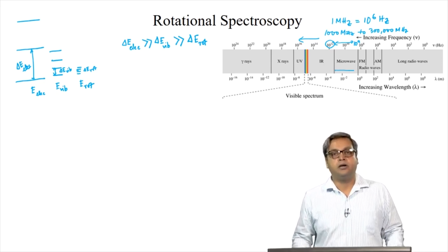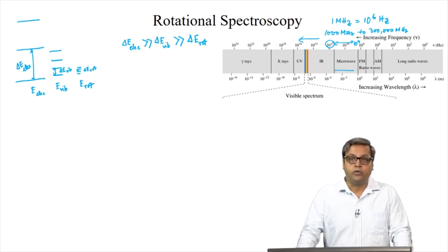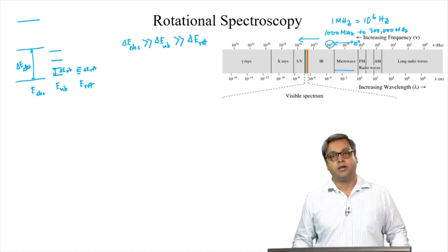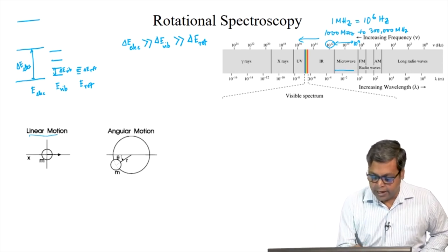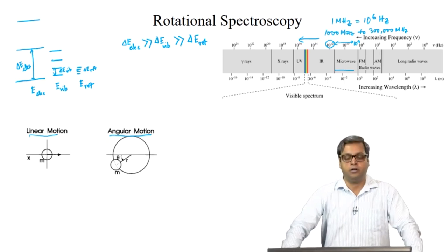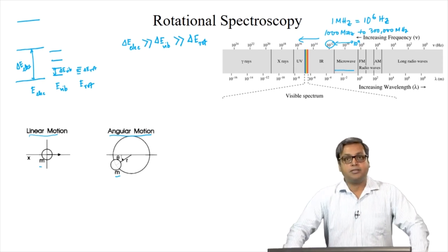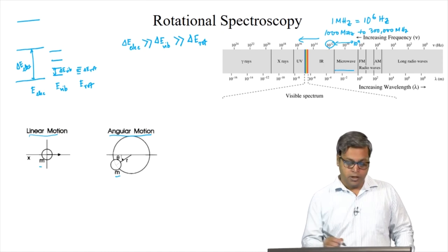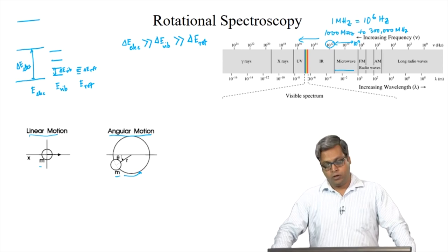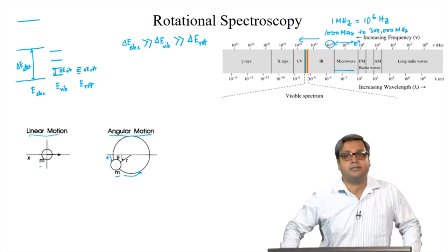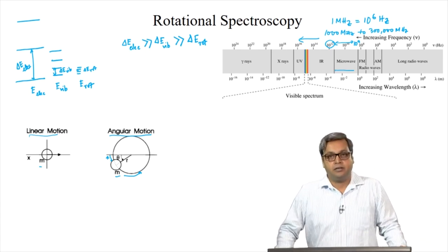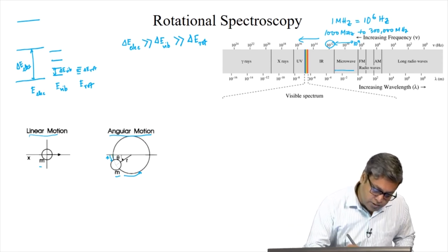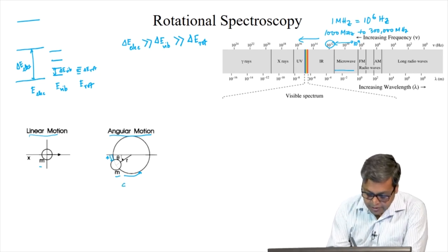Let us consider a rotating rigid body. The classical mechanics of rotational motion of a rigid body is relatively complicated. It is useful to note the extensive correspondence between linear motion and angular or rotational motion of a point particle of mass m. Let us consider this particle of mass m is rotating in a circle of radius r. For a small displacement x from any point on the circle, we can assume this small segment is linear — that is, although linear, it is part of the circumference of the circle.